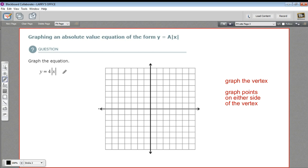In this problem we're being asked to graph an absolute value equation. In this case, the equation is y equals four times the absolute value of x. When we graph an absolute value equation we're going to get something that looks like a V. It might be squished or stretched or flipped upside down or moved around, but it's going to look like a V.